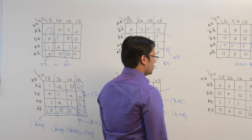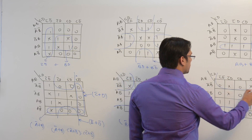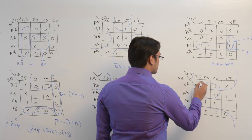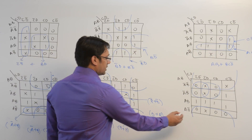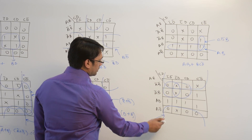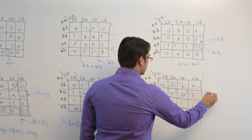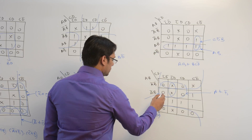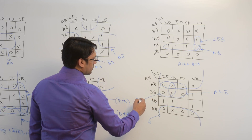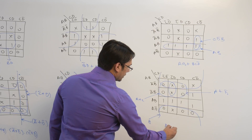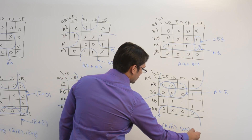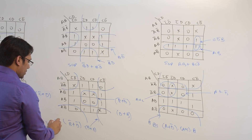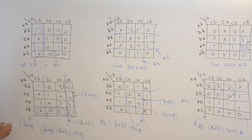In the last K-map, we can make a subcube of size 8 as well as subcubes like this and this. There are three subcubes possible. The subcube of size 8 is representing B. The subcube of size 4 is representing A plus D complement. The other subcube is representing A plus C. So the POS solution will be (A plus D complement) dot (A plus C) dot B. These are the SOP and POS expressions for each K-map.